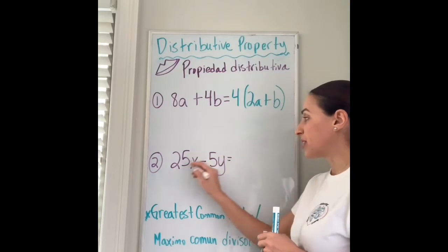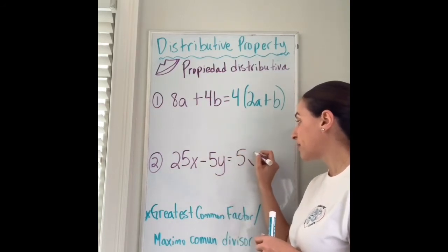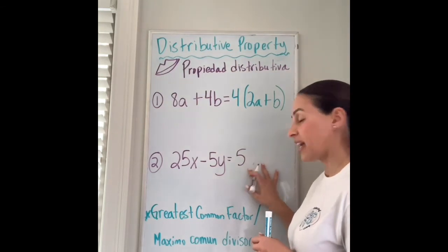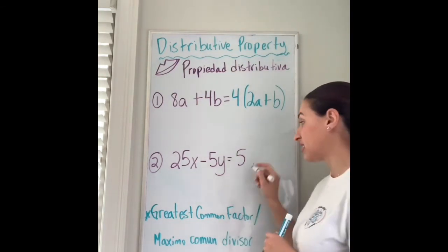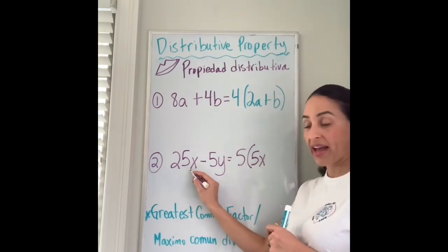So I'm going to do 25 divided by 5 is 5x. Oops, excuse me, I need to put the 5 outside. My greatest common factor goes outside the parentheses, and I write 5x. So 5 times 5 would be 25x, right?